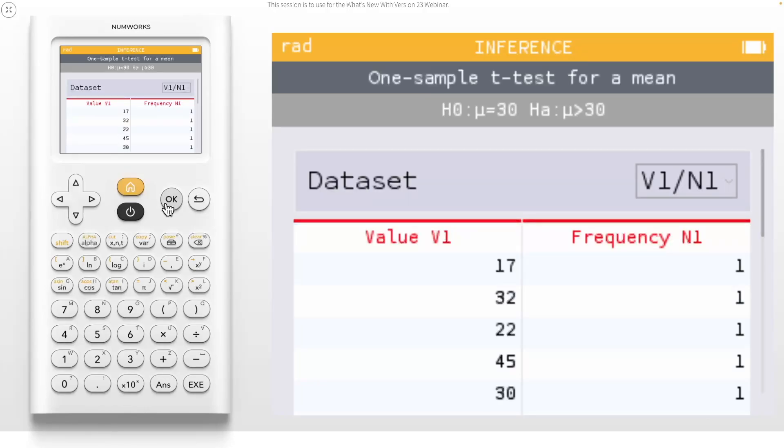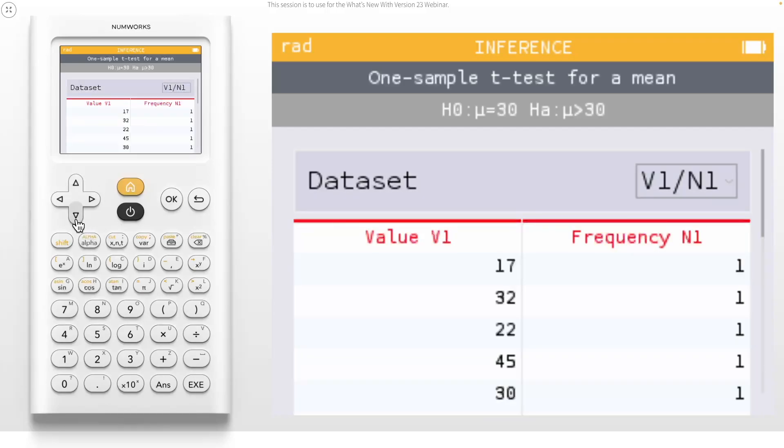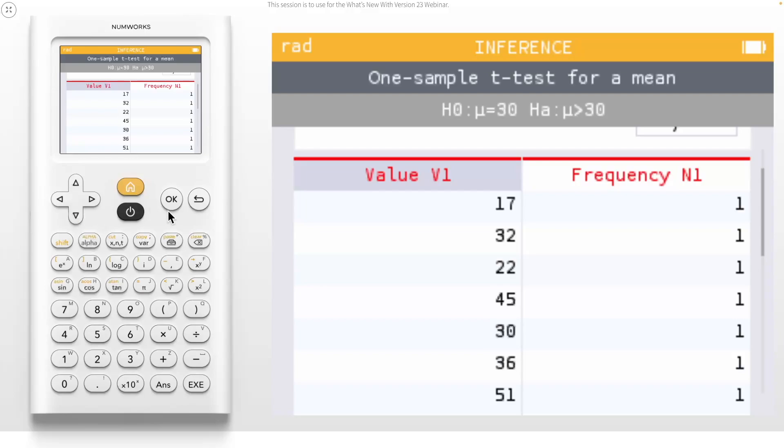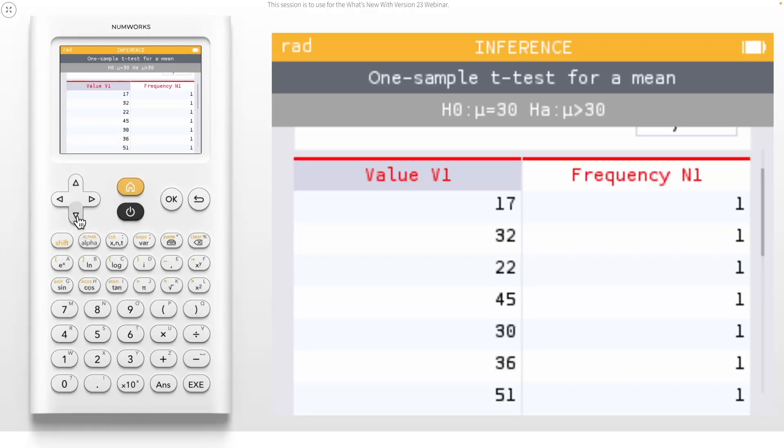Here, columns of data from the Statistics app are synced to the Inference app. You can also press OK on the data set to switch to a different or empty set. Pressing OK on a column header will give you the option to sort, fill with a formula, or clear the table. Backing out of the column header, you can edit, delete, or add values within the columns themselves.